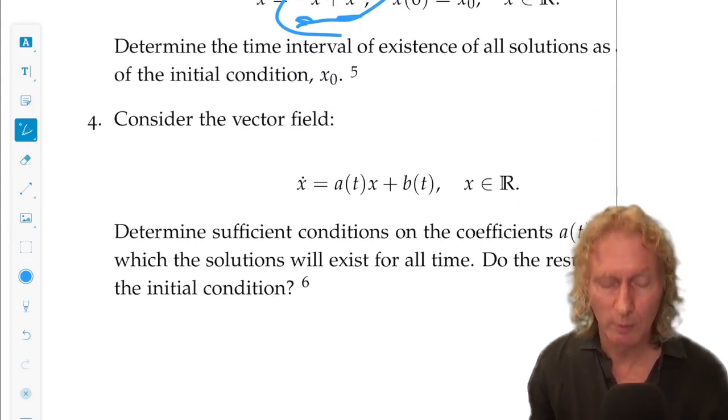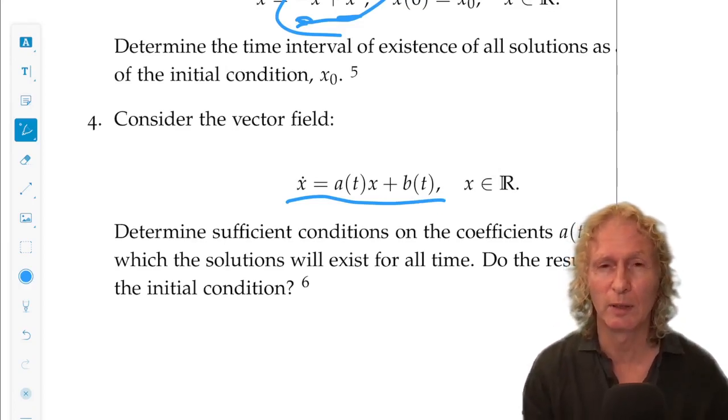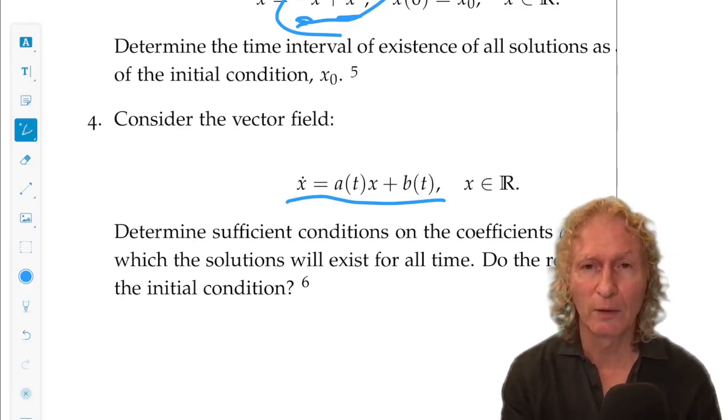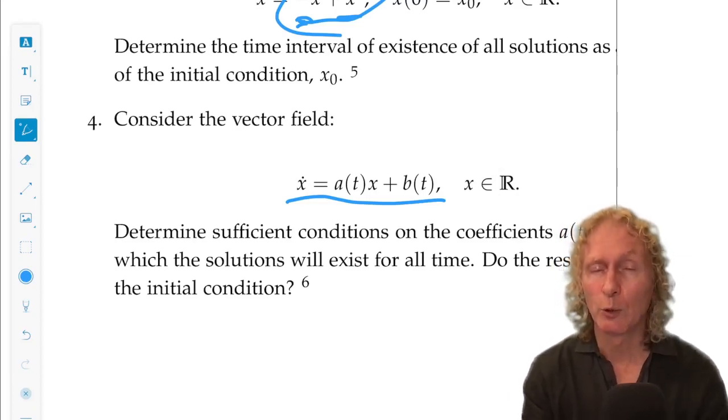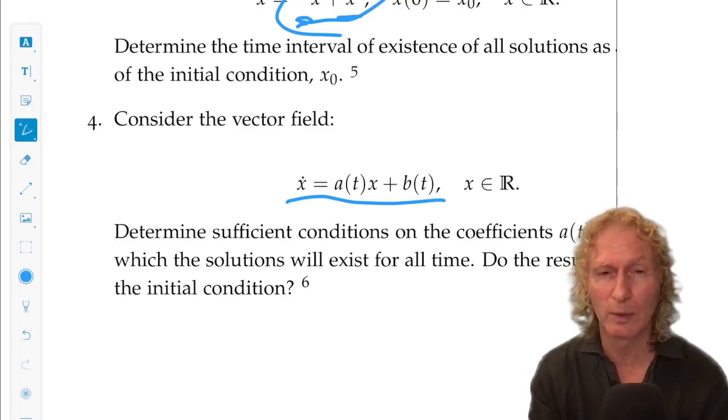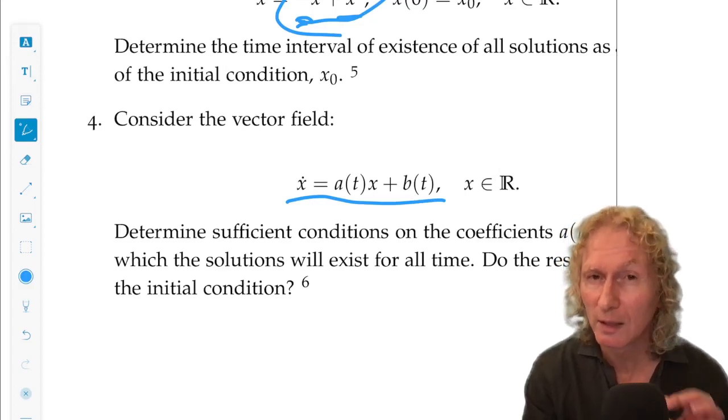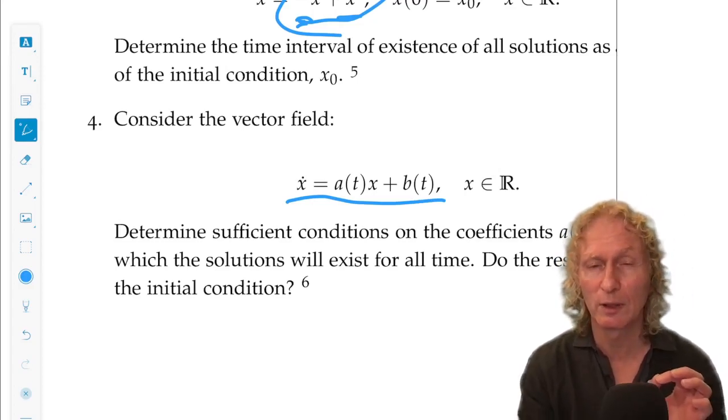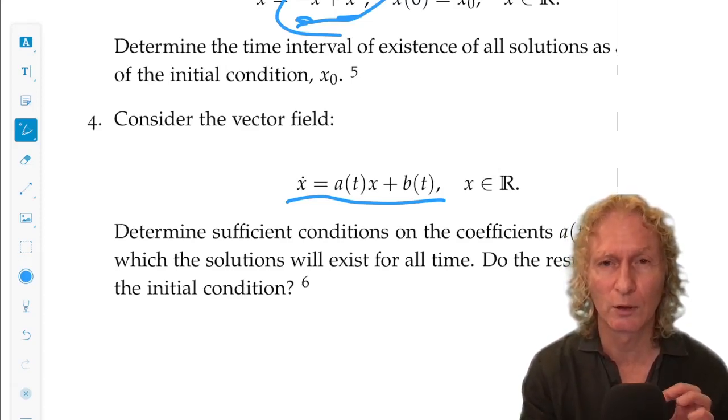And the last problem is a linear system. This is the type of system which I believe you solved in your calculus course. And so you may need to look back at Appendix B to revise the technique for solving this. But you get the solution and it's expressed in terms of integrals involving a of t and b of t and the initial conditions. And so what I want you to tell me is what conditions you need to put on a of t and b of t and the initial conditions so that the solution exists for all time.